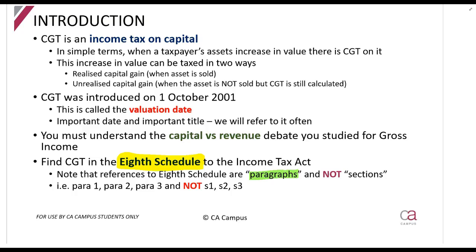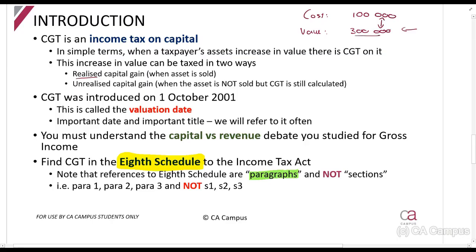The idea behind capital gains tax is that if there has been an increase in the value of your assets, you need to be taxed on it. For example, if you bought an asset for R100,000 and its value today is R300,000, that R200,000 increase potentially needs to be taxed. If you sell the asset for R300,000, that is what we call a realized capital gain — there's an actual sale, you've received actual money, so it is taxed.